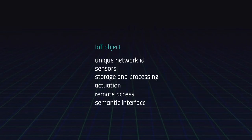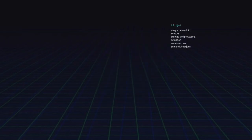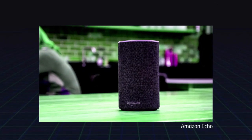This gives us a systemic perspective of the kind of new object that emerges with the Internet of Things: it has a unique network ID, some sort of sensor, storage and processing power, the ability to actuate action, it allows remote access to a specific locale, and it has some sort of semantic interface — more often than not for humans. Let's look at some examples.